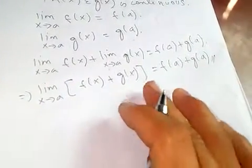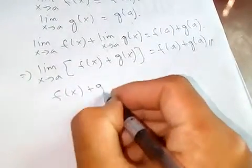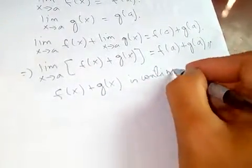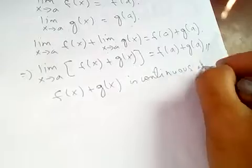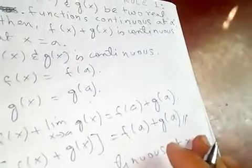So this shows that f of x plus g of x is continuous at x equal to a. And continuous function is what?